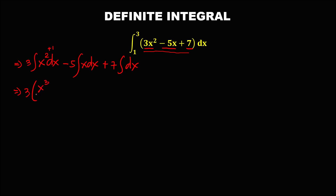To simplify: for the first term, we add 1 to the exponent giving x³, and the denominator must equal that exponent, so we get x³ over 3. Then minus 5 times — adding 1 to the exponent gives x² over 2. Then plus 7 times x for the integral of dx, with the lower and upper limits.